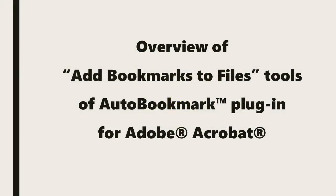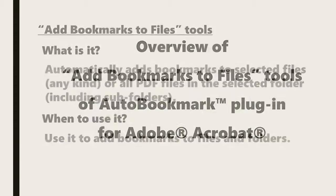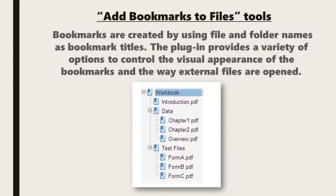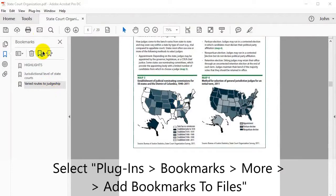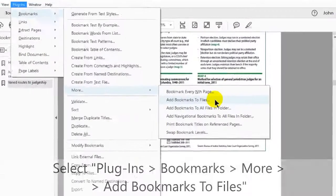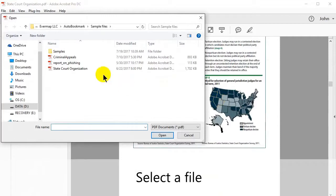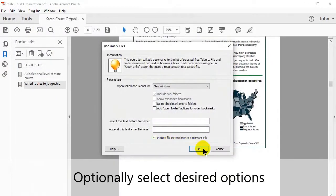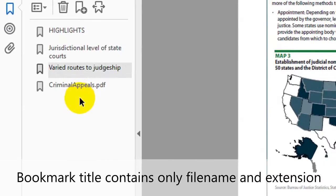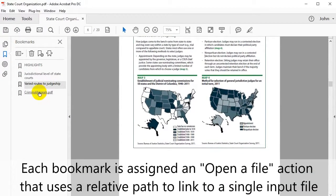Let's look at an overview of the Add Bookmarks to Files tool for the Auto Bookmark plugin. This tool automatically adds bookmarks to selected files of any kind or to any PDF files in a selected folder, using file and folder names as bookmark titles. The plugin provides a variety of options to control the visual appearance of the bookmarks and the way external files are opened. Select Plugins, then Bookmarks, More, and then Add Bookmarks to Files. When the window opens, select a file and click Open. You can choose some other options before clicking OK. Each bookmark will be assigned an open-a-file action that uses a relative path to link to a single input file.